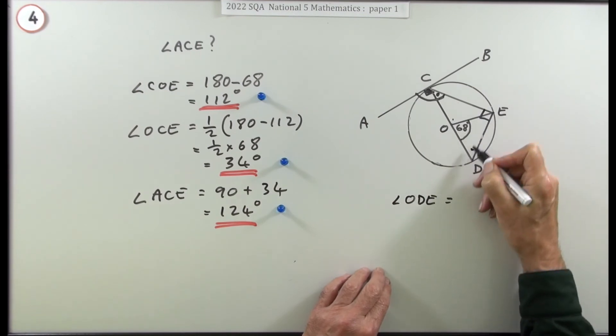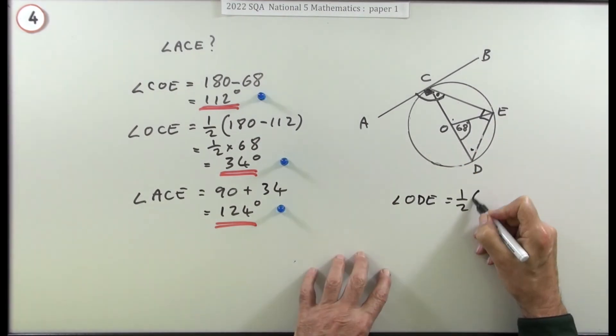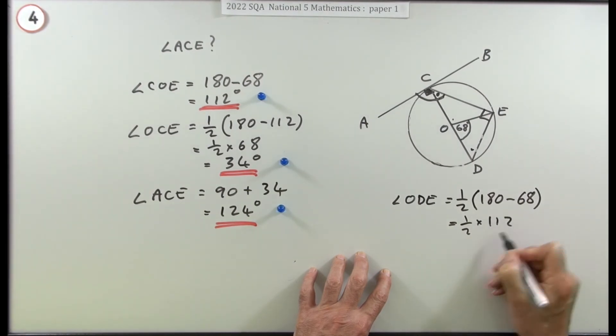Because ODE would be - they share what's left over - that would be a half of the 180 minus 68, so that's a half of the 112, so that's going to be 56 degrees. That would have got a mark.